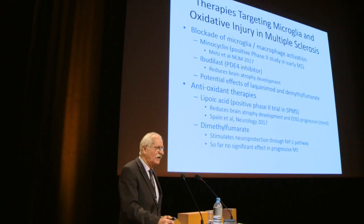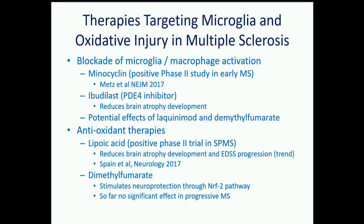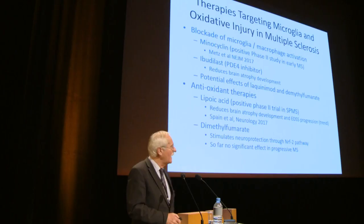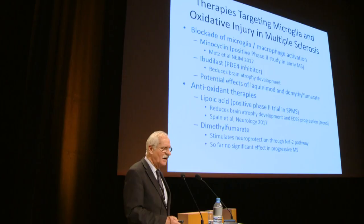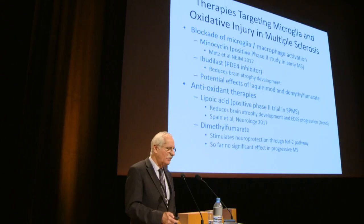This is important because emerging therapies that may influence the progressive stage of the disease include those involving downregulation and deactivation of microglia and macrophage populations, and early-stage data suggest that direct antioxidant therapies may be at least partly effective in slowing brain atrophy progression.